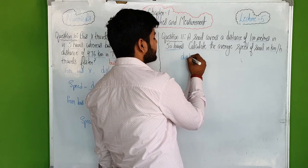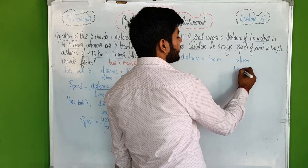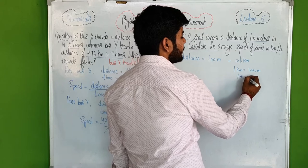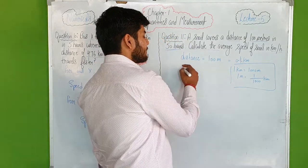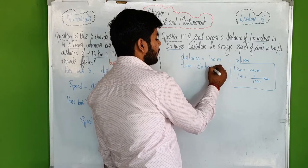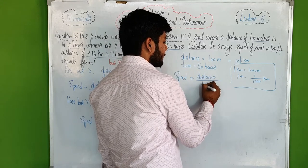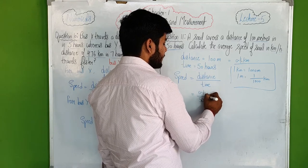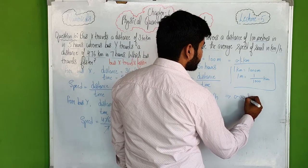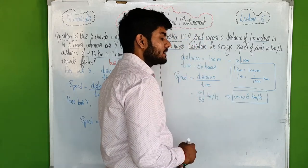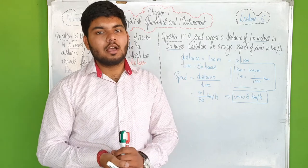Distance equals 100 meters, which we write as 0.1 kilometers, because 1 kilometer equals 1000 meters. Time is already 50 hours. Speed equals distance upon time, so 0.1 upon 50 equals 0.002 kilometers per hour. This is the speed of the snail.